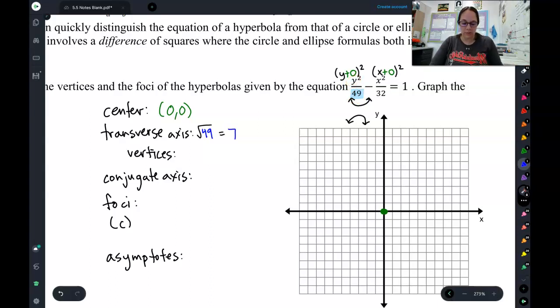So that means that 7 should go up and down, because y always goes up and down. So 1, 2, 3, 4, 5, 6, 7 up, and 1, 2, 3, 4, 6, 7 down. There's our transverse axis.